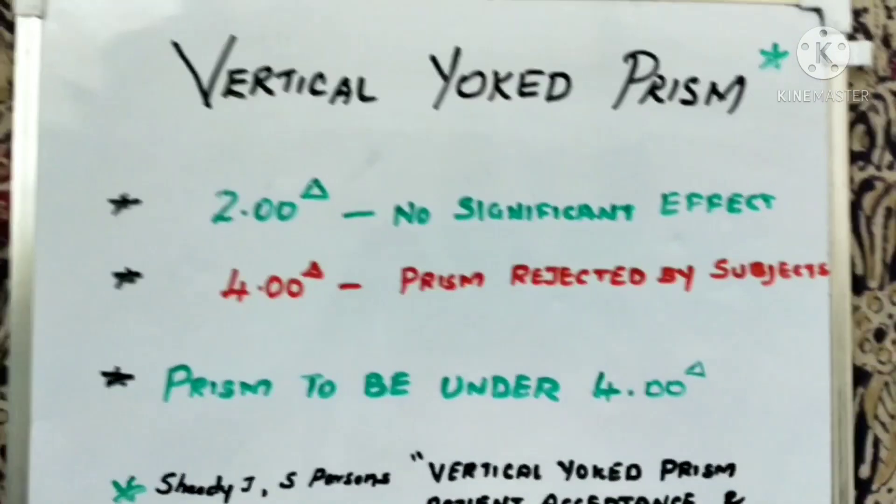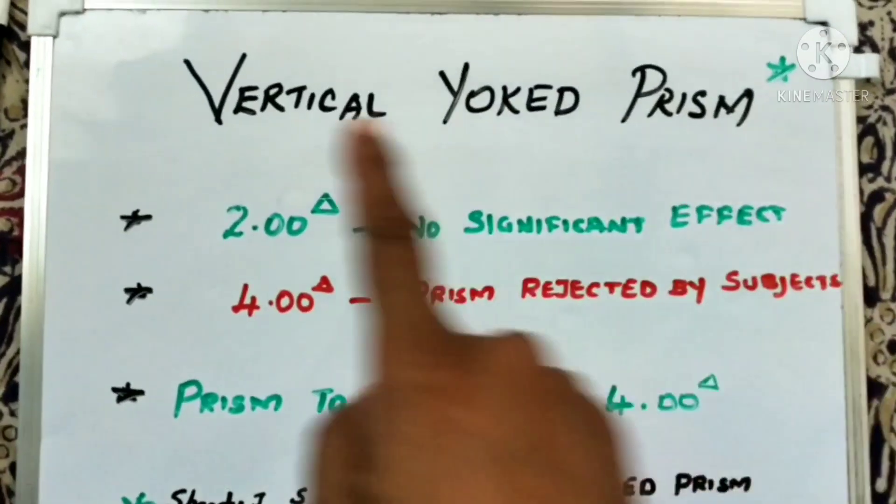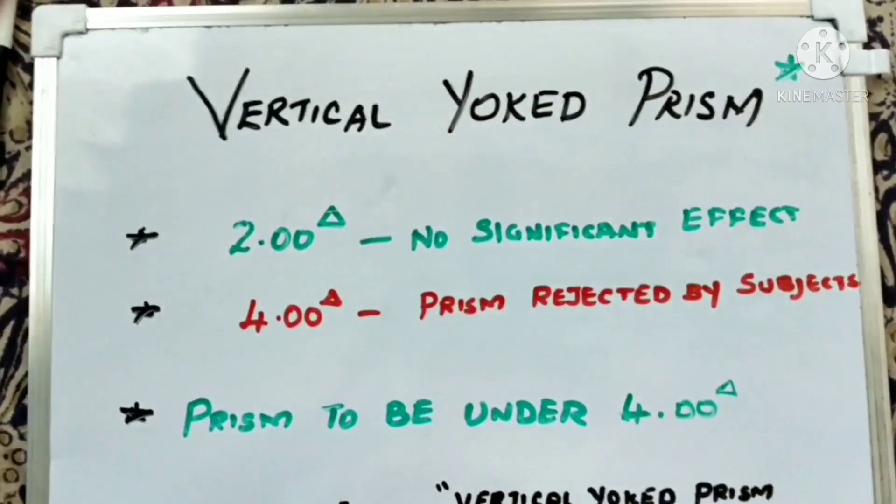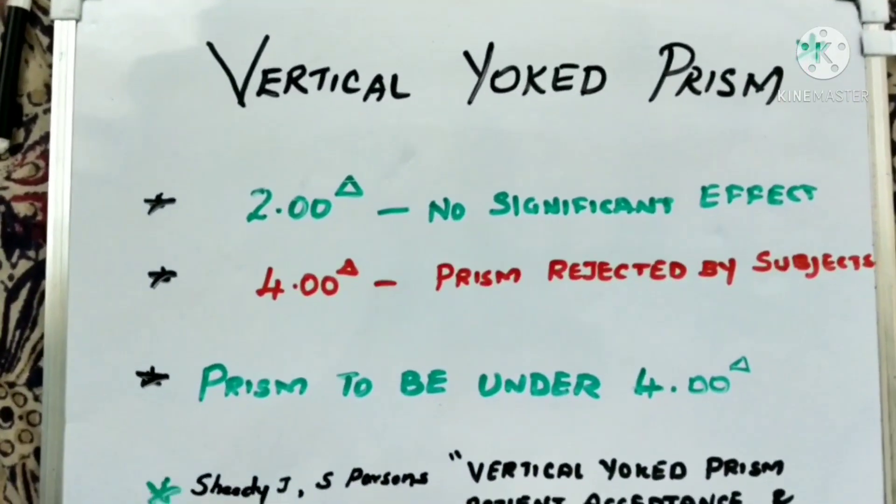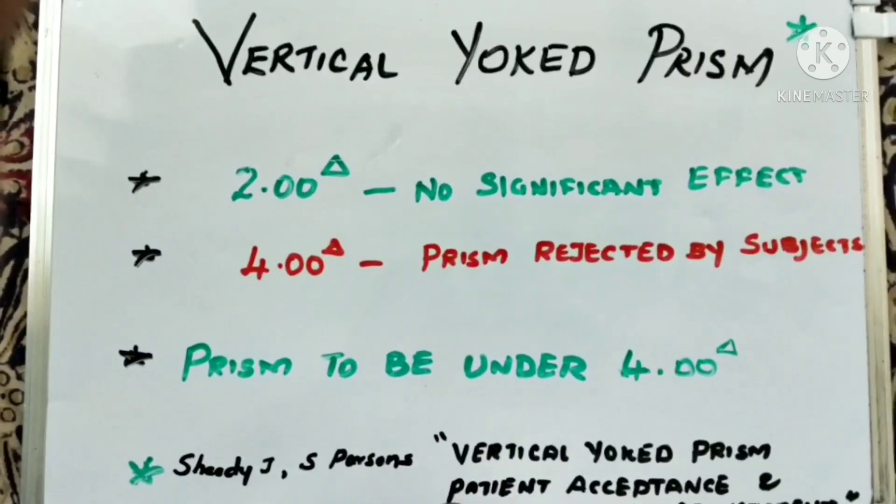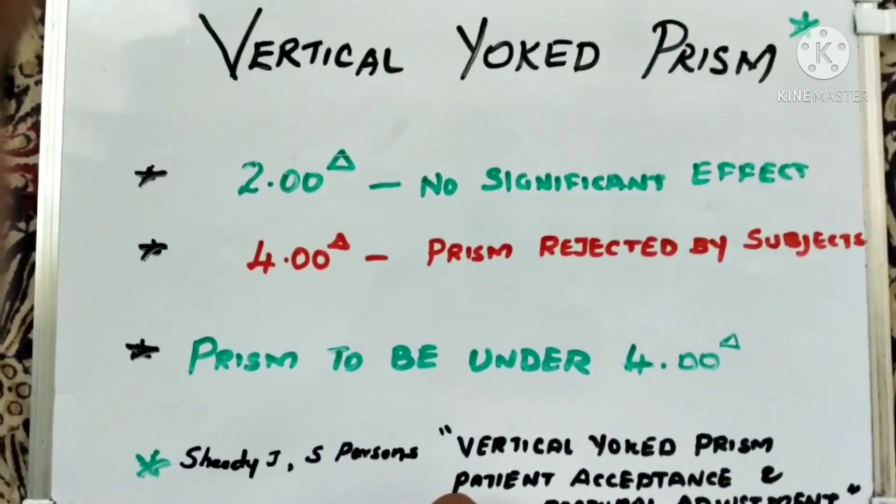It is clearly evident that because we are grounding a vertical prism, we have vertical yoked prism. That means both lenses will have vertical prism grounded on them. If there is a prism, we need to check for tolerance and see what impact it has.